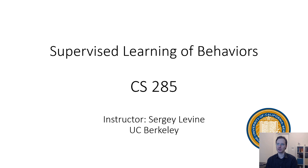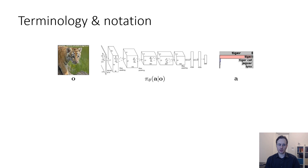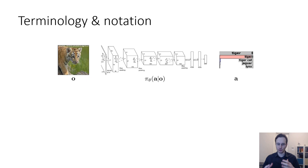Hello and welcome to the second lecture of CS285. Today we're going to talk about supervised learning of behaviors. Let's start with a little bit of terminology and notation. If we have a regular supervised learning problem, like a computer vision object recognition problem, we might want to recognize objects in an image. An input image goes through a deep neural network and the output is a label. We're going to use reinforcement learning terminology and gradually work from a standard supervised learning example to a reinforcement learning problem.